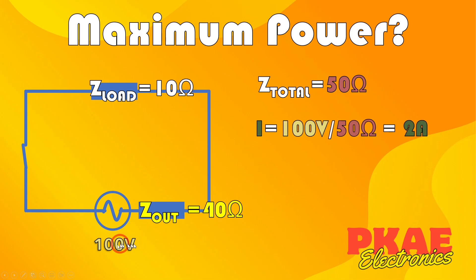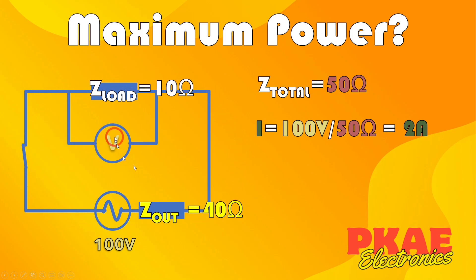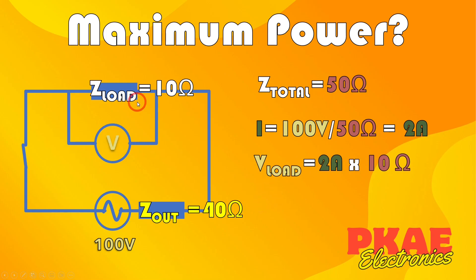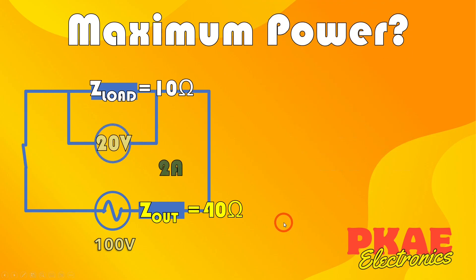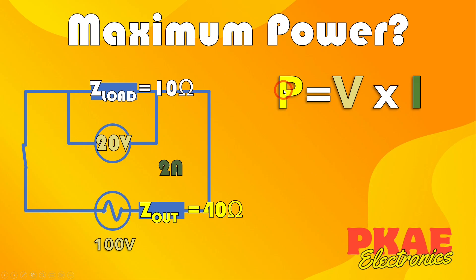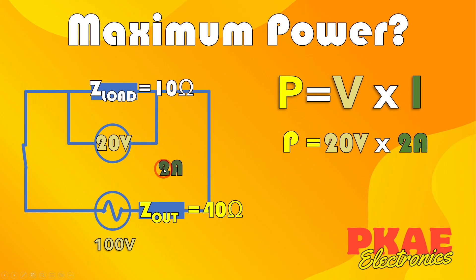That means the current, which is 100 volts divided by the total impedance of 50 ohms, gives us 2 amps. So we know there's 2 amps running in that whole circuit. If we put a voltmeter across the load, we've got a 10-ohm load with 2 amps running through it. So the voltage across that load is 2 amps times 10 ohms, giving us 20 volts. Power is volts times current, therefore the power is 20 volts times 2 amps, giving us 40 watts.